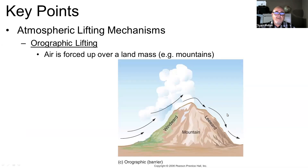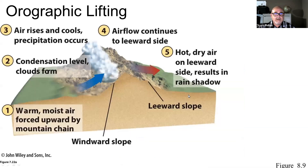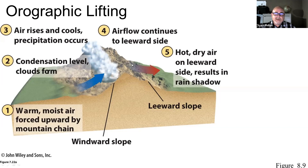A third way is orographic lifting. This has to do with what we call the windward and leeward sides of mountain ranges. When air is pushed over a physical barrier like a mountain range, that's called orographic lifting — sometimes also called orographic precipitation. As winds like the westerlies or trade winds encounter a mountain range like the Sierra Nevada or the Andes, they're forced upward, creating condensation and precipitation. On the other side, where the air moves downward, it heats up and becomes drier.